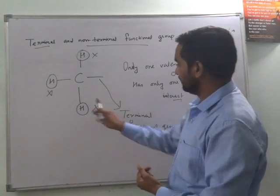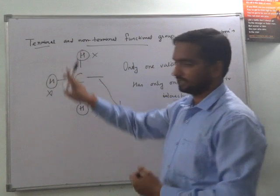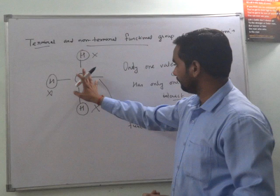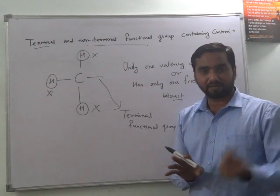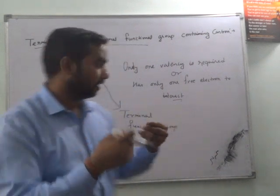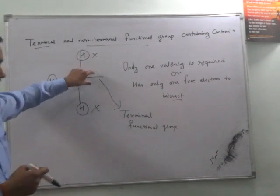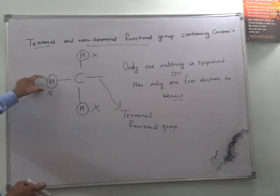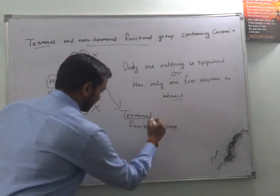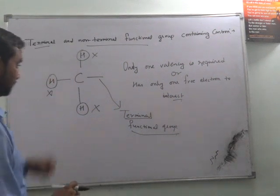When 3 electrons have already been shared, already occupied, and only one is free, if one is free, it is not possible to be further along. There will be no further adding. This is why we call this a terminal functional group.